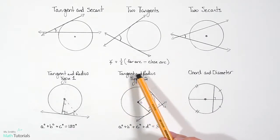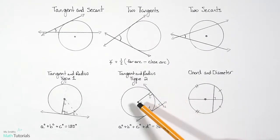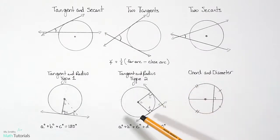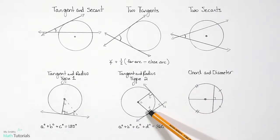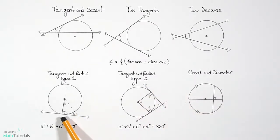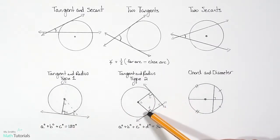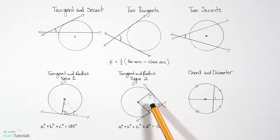For the second type of tangent and radius, we have two tangents and two radii. Each radius-tangent pair forms a 90-degree angle, just like in type one. Now we've created a quadrilateral, so it's important to remember that the angles inside a quadrilateral always add up to 360 degrees.